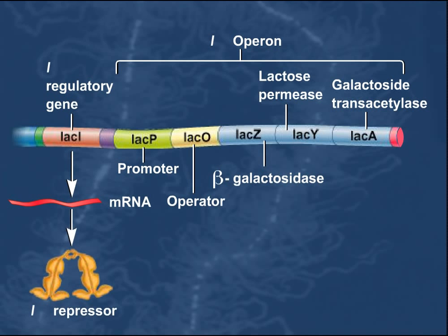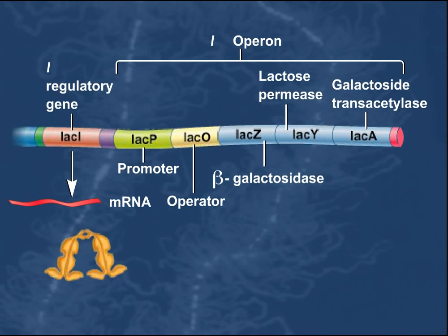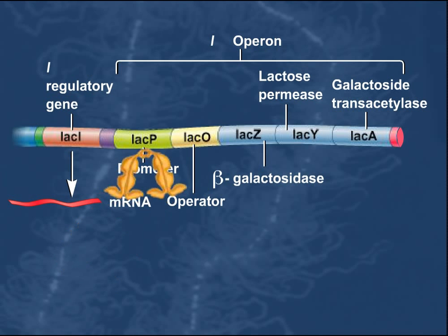In the absence of lactose inside the cell, the LAC-Repressor protein is active. In its active state, the LAC-Repressor recognizes and binds to the LAC-Operator site.